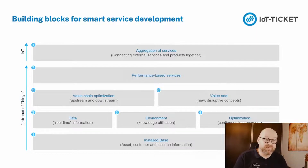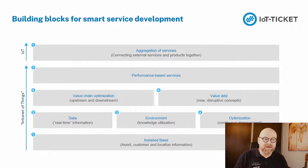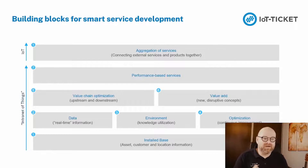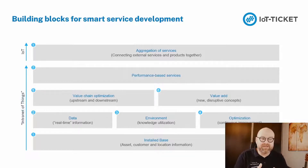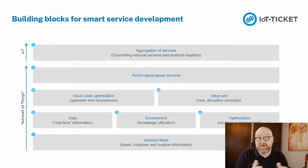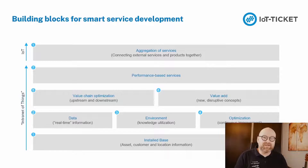That next step is the aggregation of services — connecting external services and products together. For example, hooking up external weather data, connecting to stock market information, creating a portal. We see a lot of companies creating their own IoT services and connecting many intranet-of-things services together, which allows you to derive really new types of value. You need to do these steps one by one to be truly successful — it's like building a house. Without the foundation in place, it's very hard to make it work.